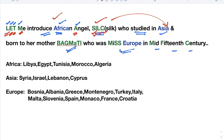'Born to her mother Bagmati, who was Miss Europe in the mid 15th century' — the green highlighted letters are the first letters of the European countries. Bagmati: B = Bosnia, A = Albania, G = Greece, M = Malta, A (T) = Turkey, I = Italy, M = Montenegro, S = Slovenia, S = Spain, M = Monaco, F = France, C = Croatia. That gives all 12 European countries.